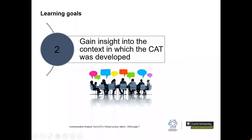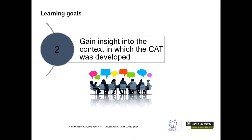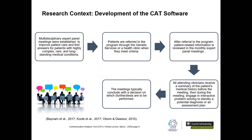Now that I've provided the rationale for why the CAT was developed — essentially to provide a user-friendly and improved method of collecting fine-grained, moment-to-moment team dynamics in real-world settings — I'm going to briefly explain the context the CAT was developed in. My colleagues at the Research Centre developed the CAT as a field research tool in collaboration with a program aimed at improving medical diagnosis for uncommon diseases in children.